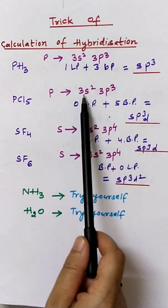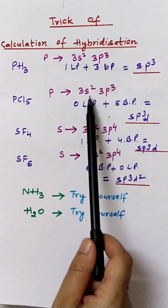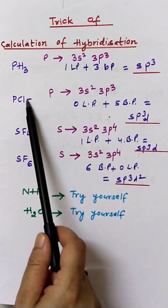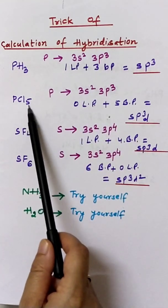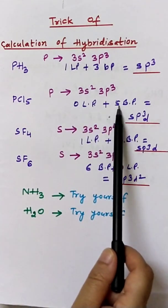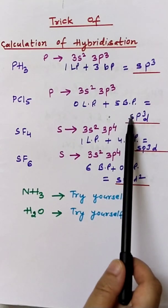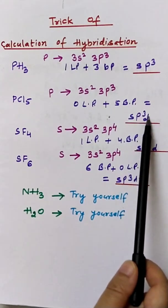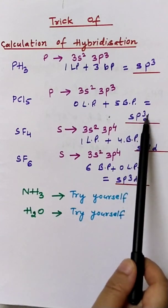PCl5: phosphorus has the same 5 valence electrons and will form 5 bond pairs with 5 chlorine atoms. No lone pair is present. The hybridization will be sp3d: 1 plus 3 plus 1 equals 5.